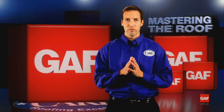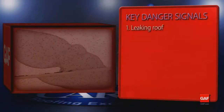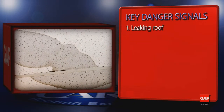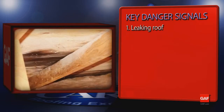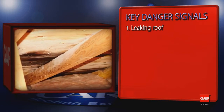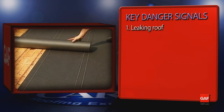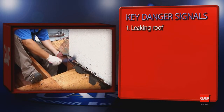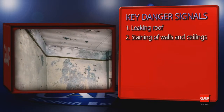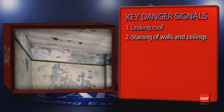Leaking is obviously one of the most common signs of a failing roof system. You often see these signs in an attic after a heavy rain. The leaking may be caused by inadequate underlayment or deteriorated flashing. Another leak indicator is the appearance of stains on interior ceilings and walls.